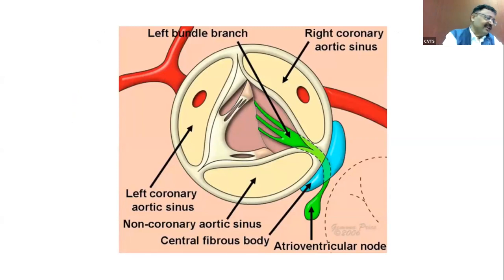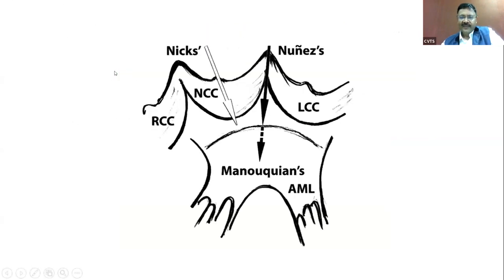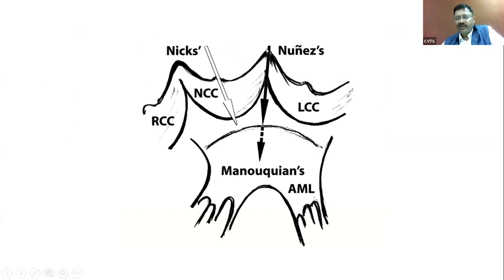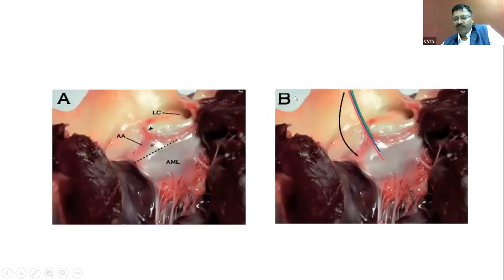Regarding root enlargement techniques: posterior root enlargement typically gains one to two valve sizes, whereas anterior root enlargement can gain up to three sizes. The most popular approach is the Manougian — incision between the commissures of the non-coronary and left coronary sinus. I will now show some surgical video.